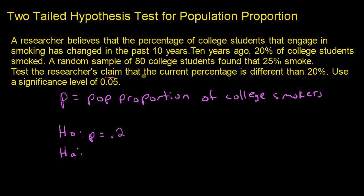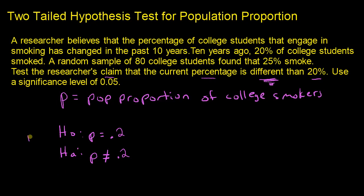The claim is: is the current proportion of college smokers different than 20%? So the alternative hypothesis is P does not equal 0.2. This is not a directional test — we're just interested in knowing if P is different from 0.2 or still equal to 0.2. Since we have the not-equal sign in the alternative hypothesis, this is a two-tailed test. That's step one: define your null and alternative hypotheses.